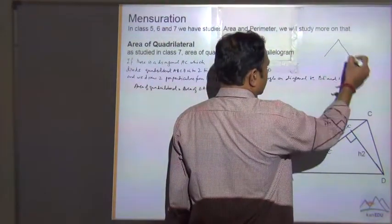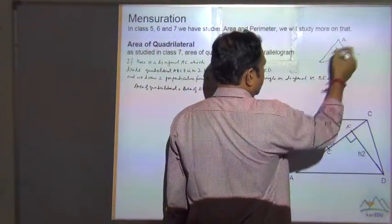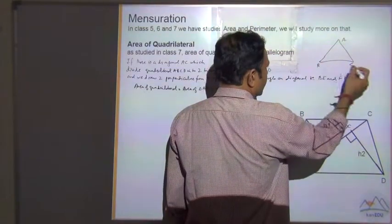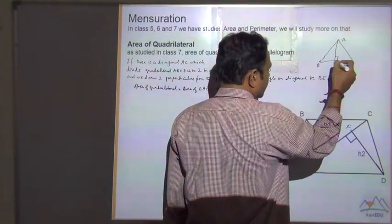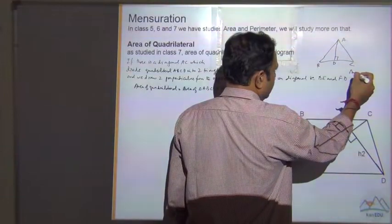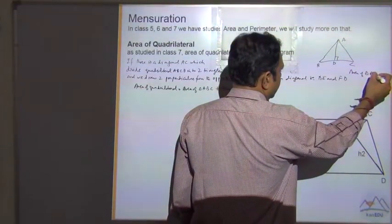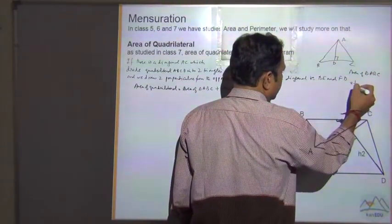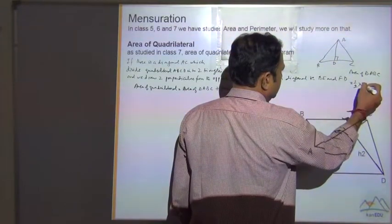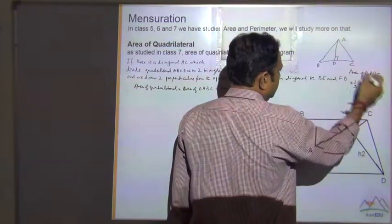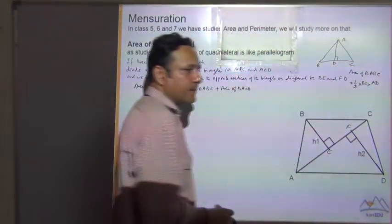Now in a triangle ABC, area of triangle ABC is equal to 1 by 2 into base into height, which is the perpendicular of the base.